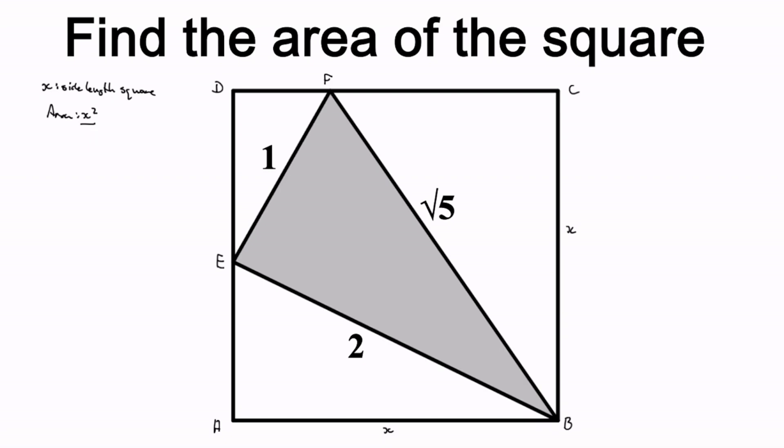Now if we would take a closer look at our triangle, specifically this angle here, angle BEF, it looks like a right angle. It looks like it measures 90 degrees. So to show that it is in fact a right angle, we will be using the Pythagorean theorem.